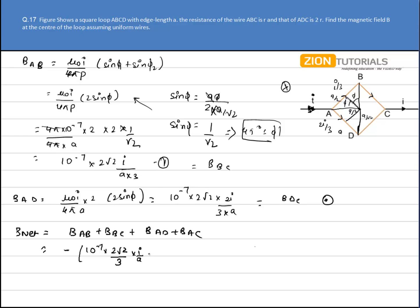So I have minus 10 to the power minus 7 times 2 root 2 by 3 times i by a, two times because AB and BC are same, plus 10 to the power minus 7 times 2 root 2 into 2i by 3 by A, again two times because B_AD equals B_AC. On solving this equation, I get the value as 4 root 2 by 3 times i by a, and that is negative. This is my answer - the negative sign shows that the net magnetic field is inside.